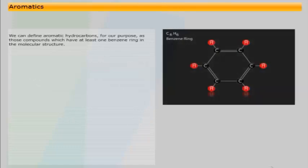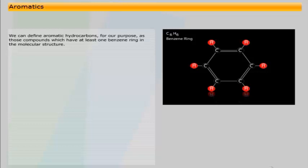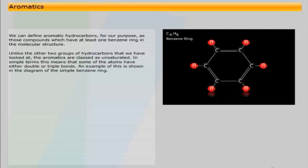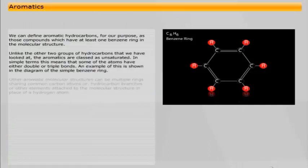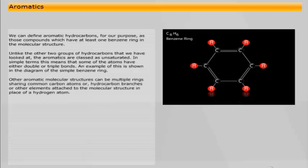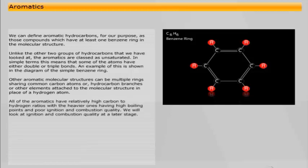We can define aromatic hydrocarbons as those compounds which have at least one benzene ring in the molecular structure. Unlike the other two groups of hydrocarbons, the aromatics are classed as unsaturated, meaning that some of the atoms have either double or triple bonds. Other aromatic molecular structures can be multiple rings sharing common carbon atoms, or hydrocarbon branches or other elements attached to the molecular structure in place of a hydrogen atom. All of the aromatics have relatively high carbon to hydrogen ratios, with the heavier ones having high boiling points and poor ignition and combustion quality.